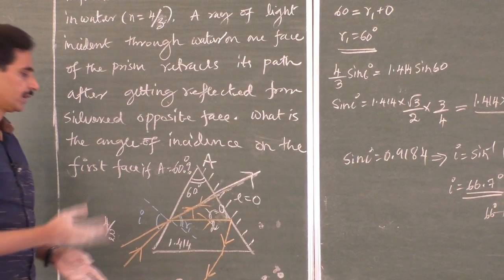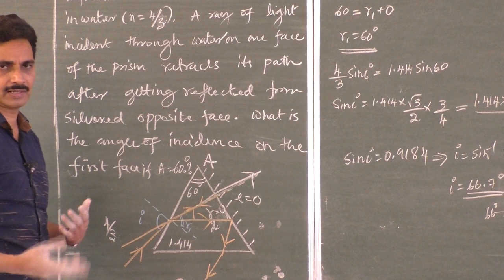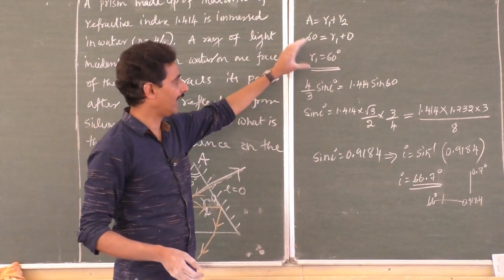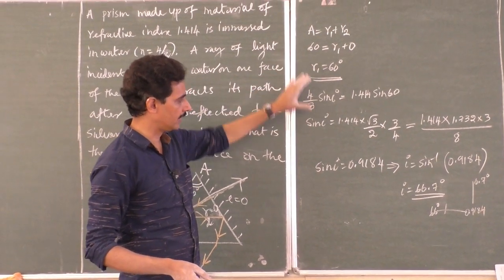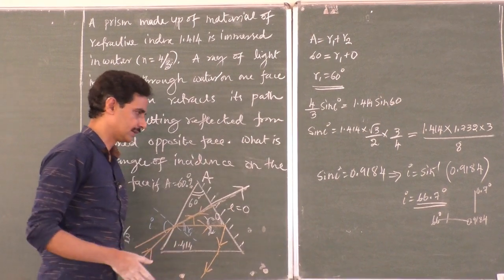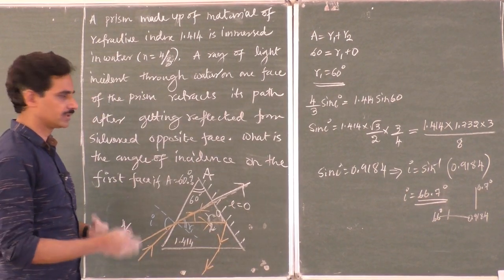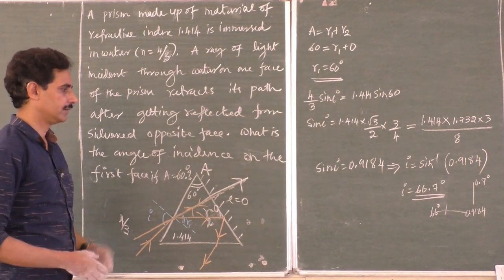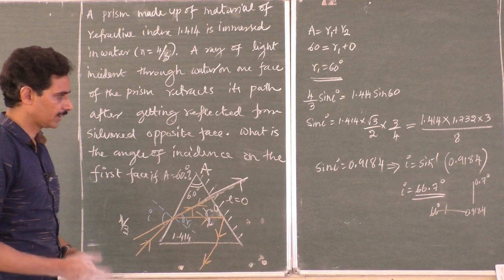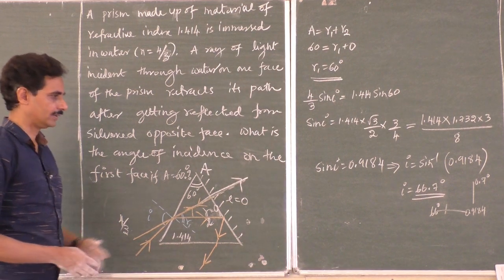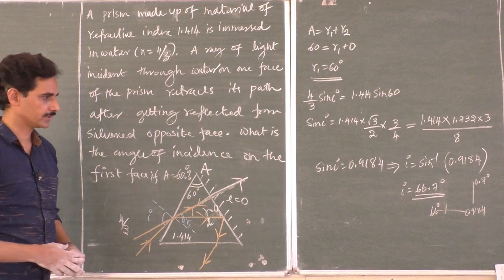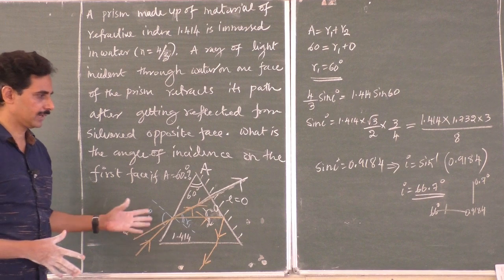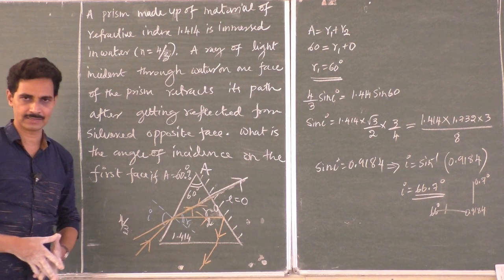This problem may also be framed as: a ray of light incident in water such that after refraction, the ray passes normally through the other face — what is the angle of incidence? You have to club reflection, refraction, prism formula, and Snell's law together. We used A = r1 + r2 from the prism formula, and the rest is general refraction. Simple problem, but you need to see such varieties. Keep on working out problems of similar type. Hope you have followed this — we will meet in the next class. Thank you.